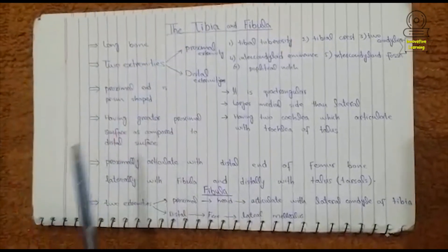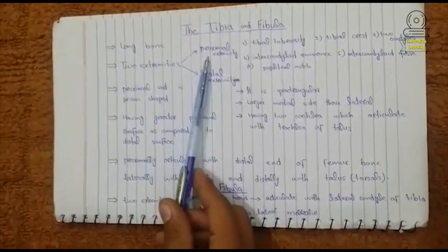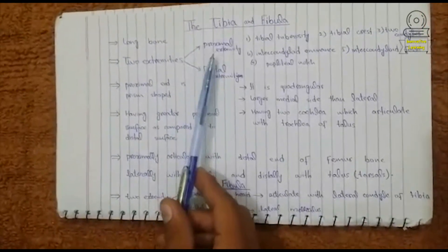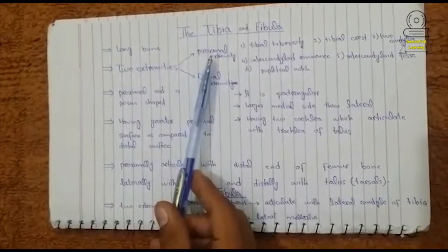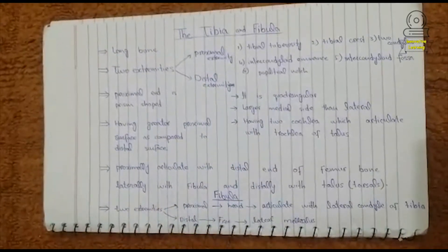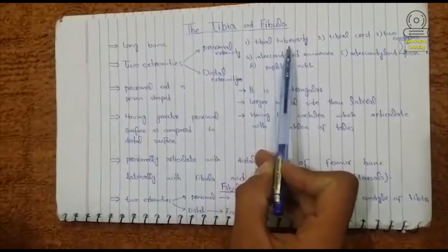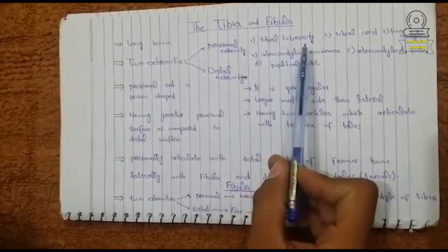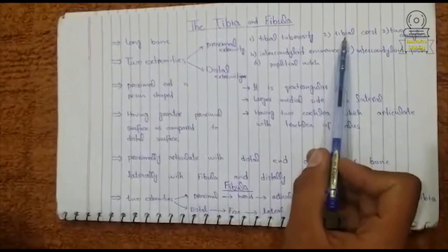The tibia is a long bone having two extremities: the proximal extremity and the distal extremity. On the proximal extremity, on the cranial side, a tuberosity is present which is called the tibial tuberosity. When we move from the tibial tuberosity toward the distal side, a crest is present which is called the tibial crest.